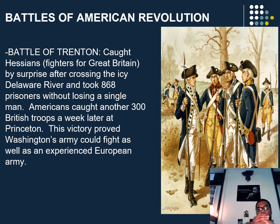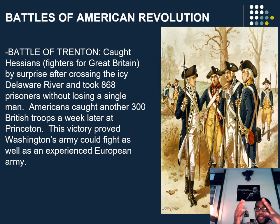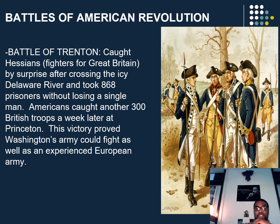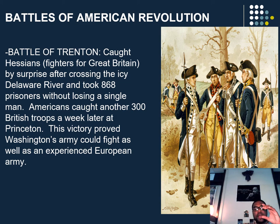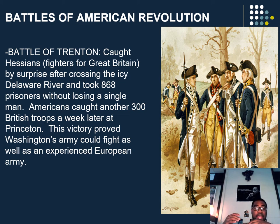The next battle of the Revolution is the Battle of Trenton. Here, the colonists caught Hessians — fighters for the British — by surprise by crossing the icy Delaware River, and took 868 prisoners without losing a single man. Americans captured another 300 British troops a week later at Princeton. This victory proved that Washington's army could fight as well as an experienced European army. At this point, it became more evident to the Americans as well as the Europeans that they could actually win this war.